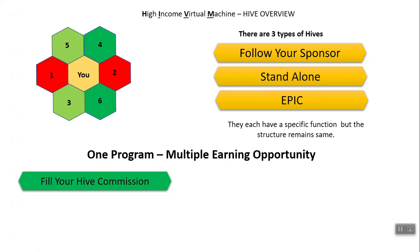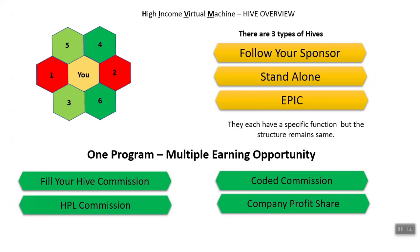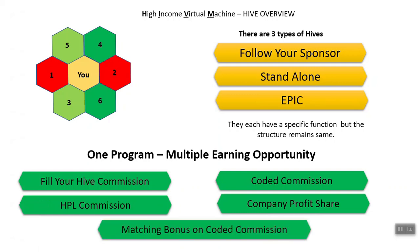You can earn by filling your hive by referring members. Then there is what is called Coded Commission. Another opportunity is called HPL, which stands for Honey Production Line. Then you can earn in the Company's Profit Share. And finally, you will be getting a matching bonus on Coded Commission. We will cover each of these opportunities in this video.